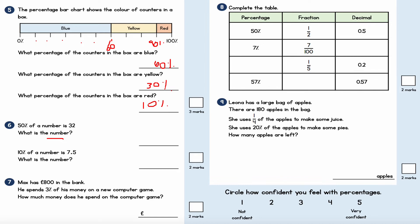If I double my answer, that will tell me the number I'm looking for, because 50% is the same as a half as a fraction. So if half of x equals 32, I multiply everything by two on both sides to solve the equation and make x the subject. I get the number to be 64. I can check: 50% of 64 is indeed 32, because half of 64 is 32.